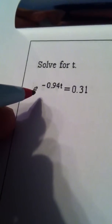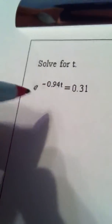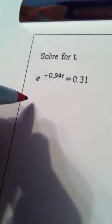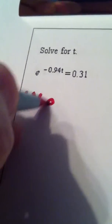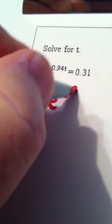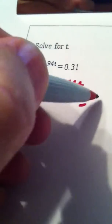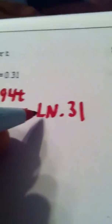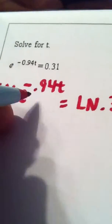So I take each of these numbers and I plug them into the natural log function. Since they're equal to start with, when I plug them into the natural log function, the results are equal. The natural log of this number is equal to the natural log of this number because the two numbers were equal to start with.